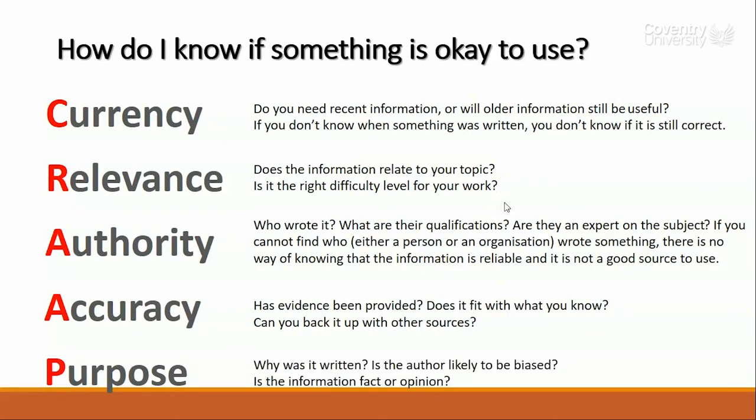Finally, the last section is purpose — the reason for the information existing. This involves thinking about why particular sources have been written. Is the author likely to be biased in some way, and is the information fact or opinion? For example, if you're looking at a commercial website, is it trying to encourage you to buy a particular product or service, and is the information they're giving you biased in any way?